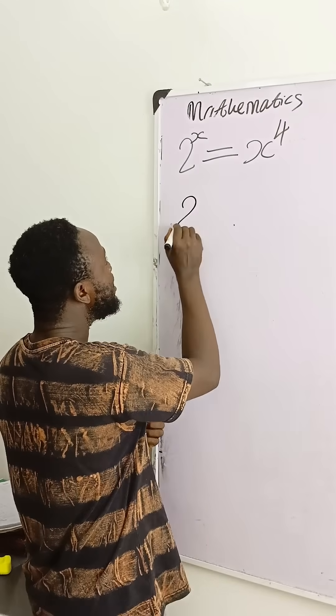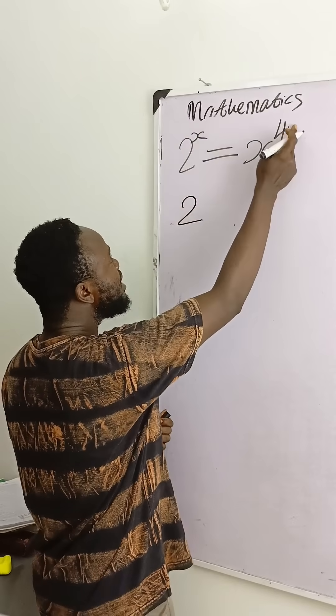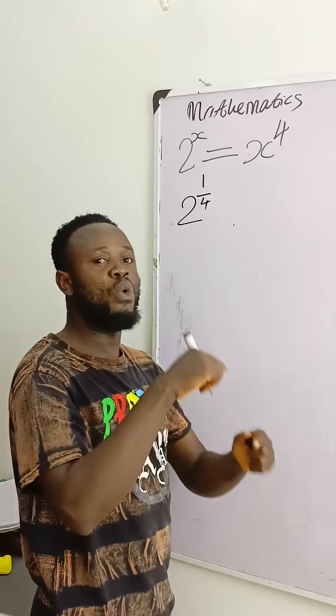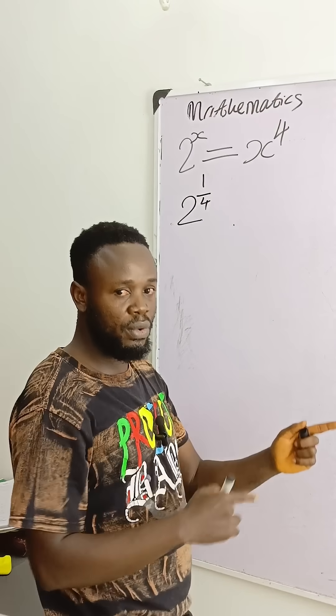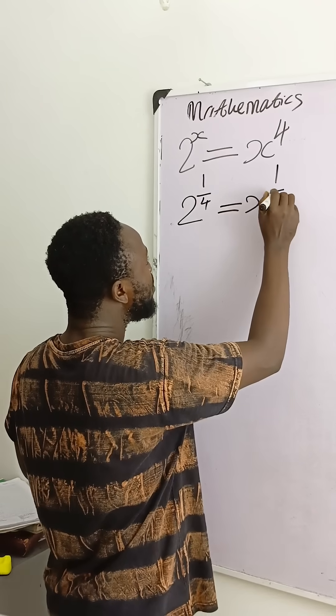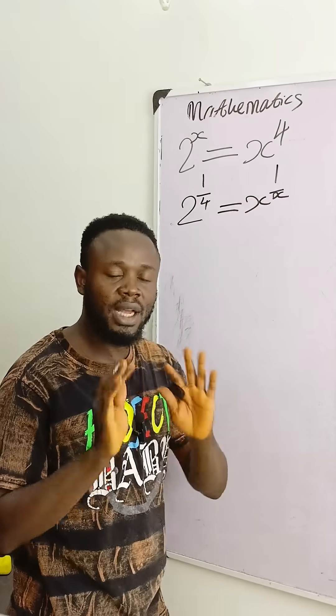What I mean is that here I have 2 power x. I can bring 4 here, but if it is coming that way it will become 2 raised to power 1 over 4. Then I will take x to that side, and if I do that it becomes something of this nature. That's the rule.